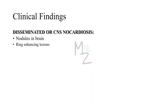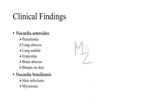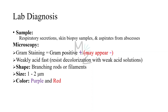Disseminated or CNS nocardiosis presents with nodules in the brain and ring-enhancing lesions. To summarize the signs and symptoms of Nocardia asteroides: there are signs similar to pneumonia, lung abscess and nodule, empyema, brain abscess, and bumps on or below the skin. Other Nocardia species include Nocardia brasiliensis, which is responsible for causing skin infections and mycetoma.